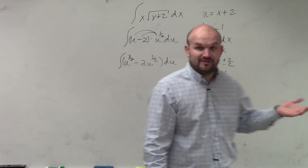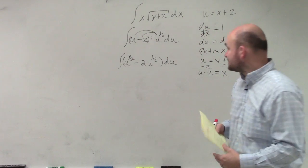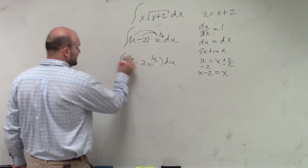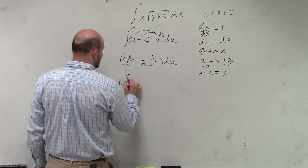Now, I can use the difference property of integration, and integrate them separately, so therefore, I'll have u to the, plus 2 over 2, which is going to be five-halves, times 2 over 5.